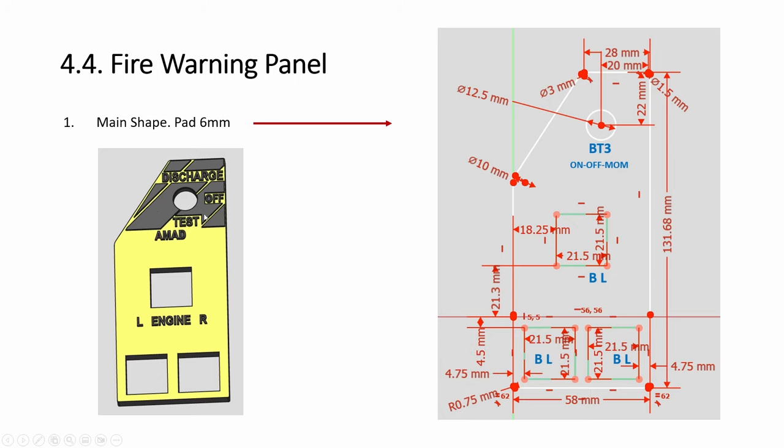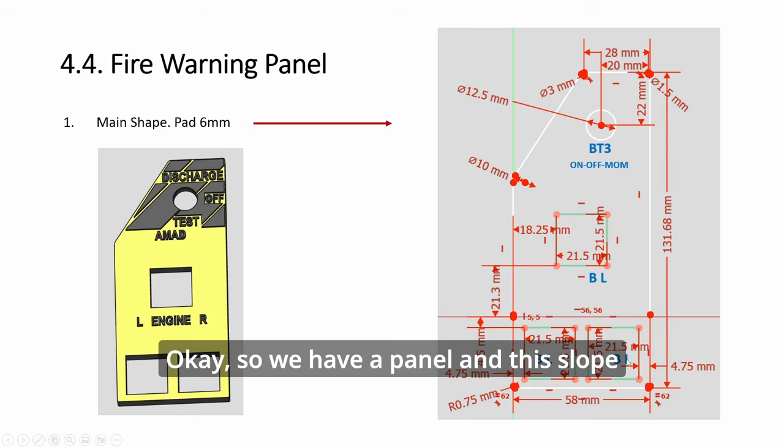The text is simple, the holes are simple. The tricky part is the raised part with the diagonal lines. So we have a panel and this slope, it depends on you how much you want to slant it. The dimensions are there, 21.5 square.